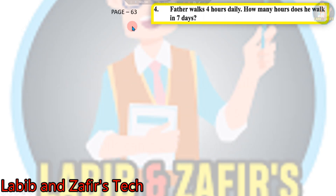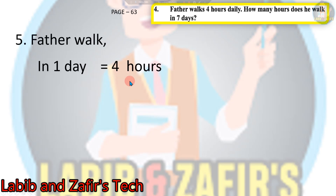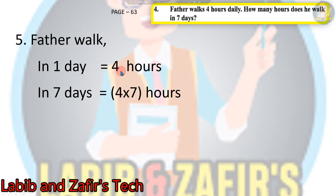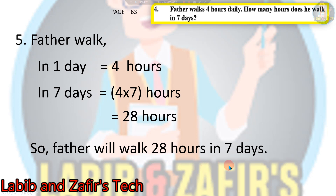Again from page 63: Father works 4 hours daily. How many hours does he work in 7 days? In one day father works 4 hours, so in 7 days he works 4 into 7. That is 4 into 7 equals 28 hours. So father will work 28 hours in 7 days.